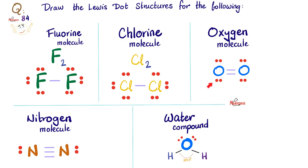For the oxygen molecule: normally oxygen has 6 electrons in the valence shell. To reach 8, we need a double covalent bond, giving both atoms an octet. For the nitrogen molecule: nitrogen has 5 valence electrons. To go from 5 to 8, each nitrogen needs 3 more, so they share 3 electrons each — a triple bond — so both nitrogen atoms achieve an octet.